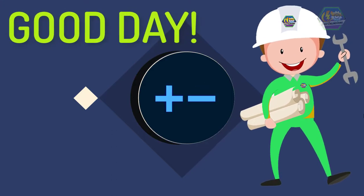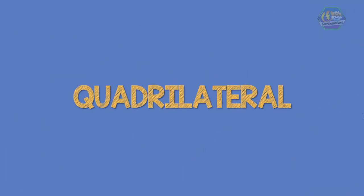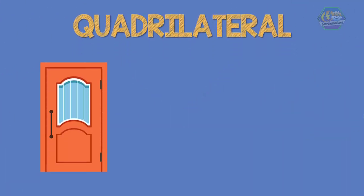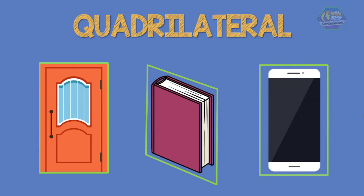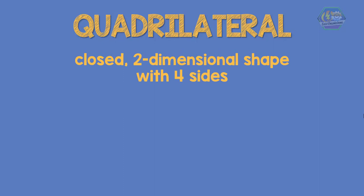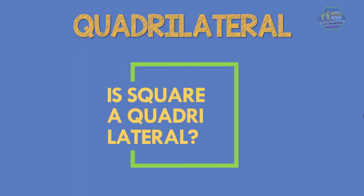Good day learners, this is Easy Engineering. For today's topic we're going to learn about quadrilaterals. Doors, books, and cell phones are examples of quadrilaterals. Did you notice something common with these things? The three things mentioned have four sides. So that means a quadrilateral is a closed two-dimensional shape which has four sides. Now let me ask you a question: is a square a quadrilateral? To answer that, we need to know first the properties of a quadrilateral.